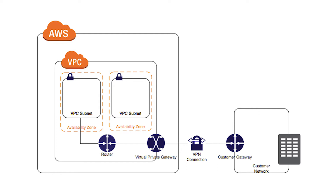VPN connections are used when you have to connect your customer data center, or on-premise data center, to the cloud. Whenever you have to connect your VPC on the AWS cloud to your on-premises data center, you would need a VPN connection. VPN connections support the IPsec protocol, which means any communication between your data center and VPC passes through IPsec tunnels, making it very secure.